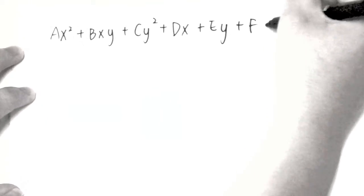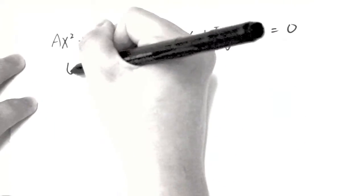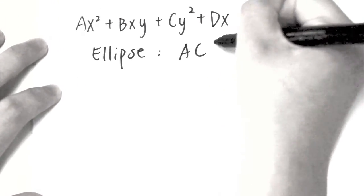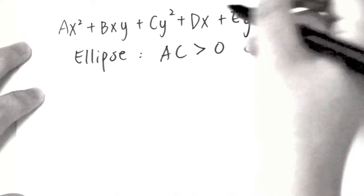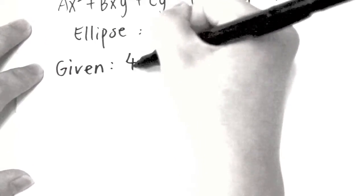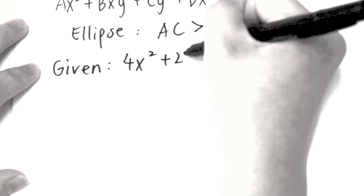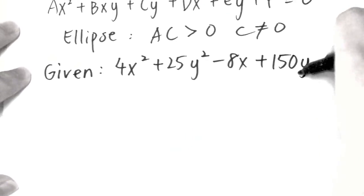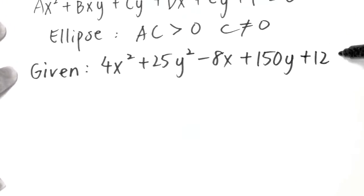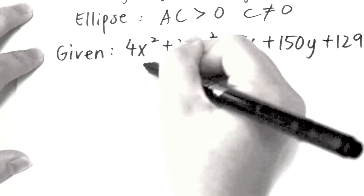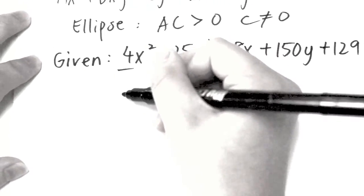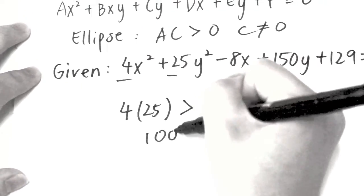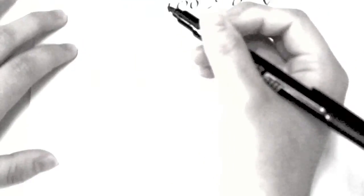This is the general equation of conics. To identify whether an equation is an ellipse, we need to make sure that a times c is bigger than 0, where c cannot be 0. In this given equation, 4x squared plus 25y squared minus 8x plus 150y plus 129 equals 0, 4 is the a and 25 is the c. 4 times 25 is bigger than 0; 100 is bigger than 0, so the equation is an ellipse.